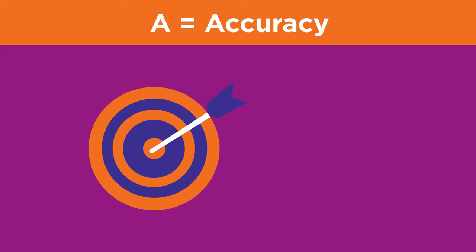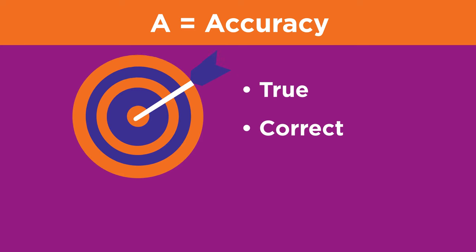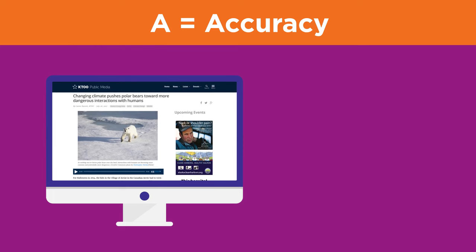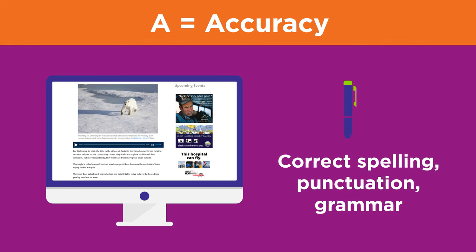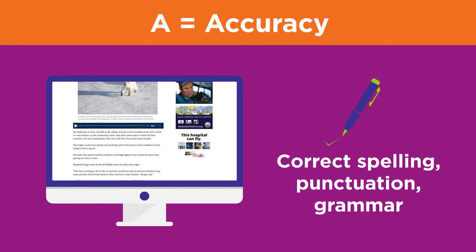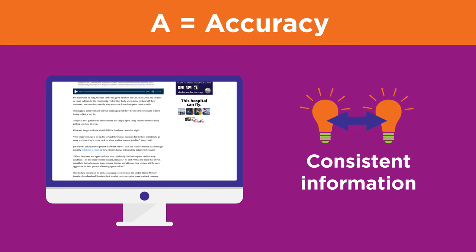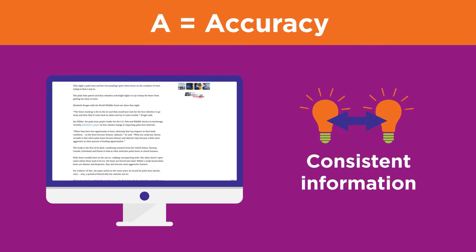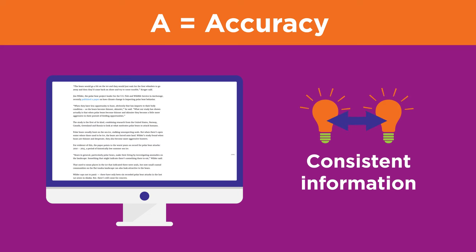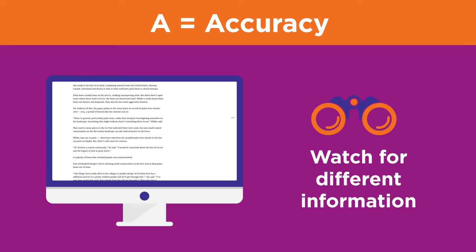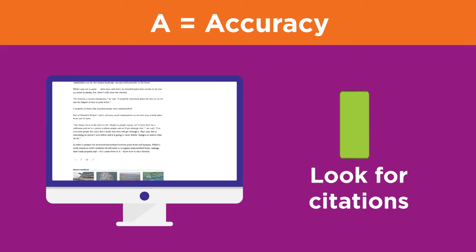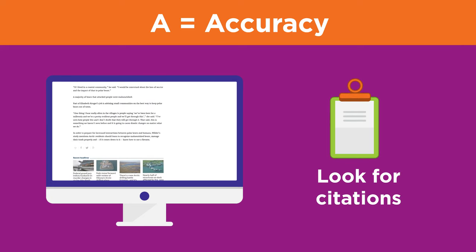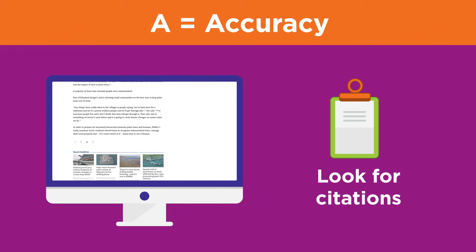Accuracy means the information is true and correct. As you browse the site, be on the lookout for signs that indicate whether or not the information is accurate. Look for correct spelling and proper punctuation and grammar. Information that is consistent with what you know or have found in other sources is more likely to be accurate. Stop and wonder about any information that is significantly different from other sources. Also, responsible sources usually list or cite where they found their information, so question an author who does not include citations.